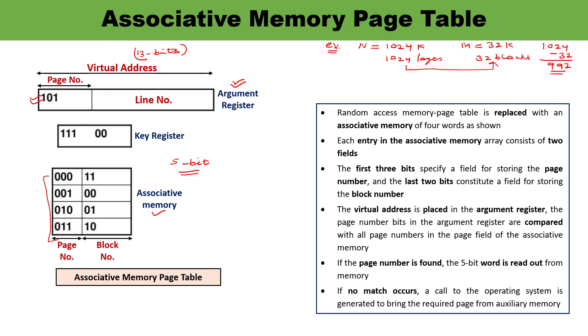This is how the associative memory page table works and why it is used — to overcome the drawback of address mapping using pages with a random access memory page table. Thank you so much for watching this video.